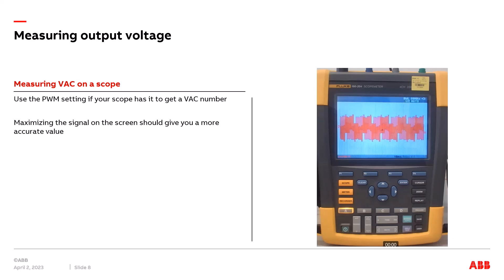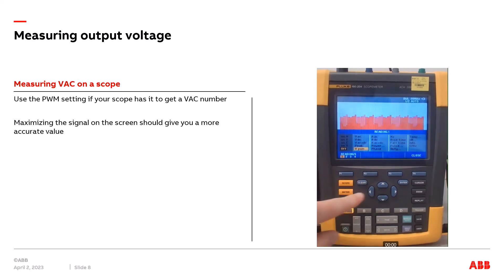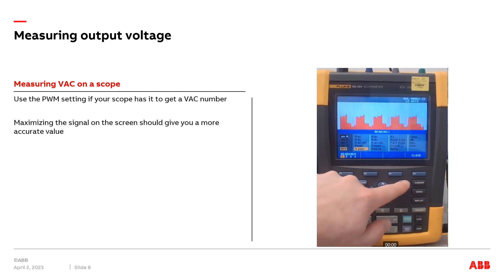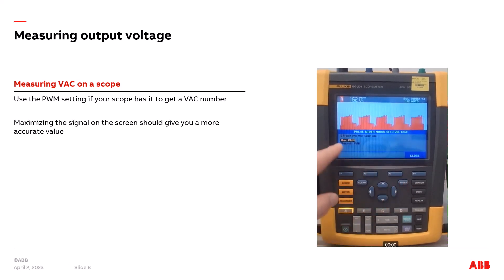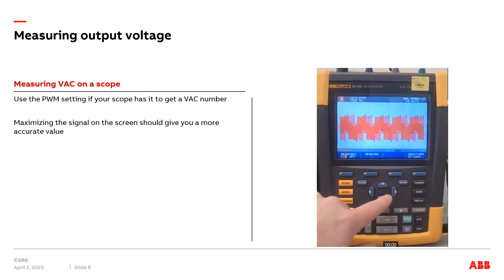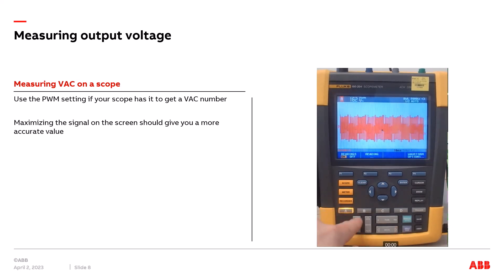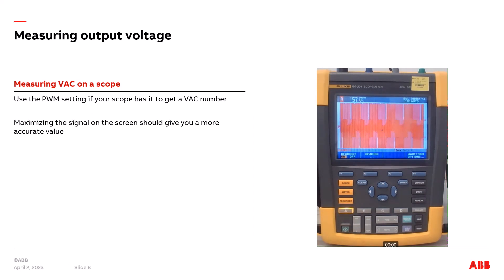Besides output frequency, we can also have the scope tell us the equivalent AC voltage of the signal going to the motor. The VFD uses PWM — pulse width modulation — to recreate the voltage. Ideally, instead of just using voltage AC, use a setting of voltage PWM if your scope has it, as this gives a more accurate equivalent AC voltage. Selecting voltage PWM shows 162 volts; increasing the resolution to maximize the signal on screen gives around 157–158 volts, which more accurately represents the equivalent voltage as displayed on the drive's control panel.